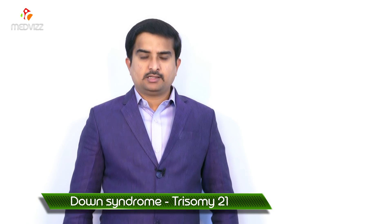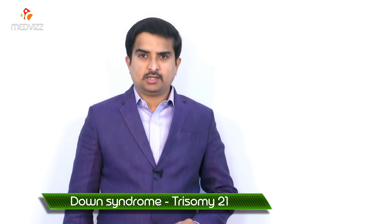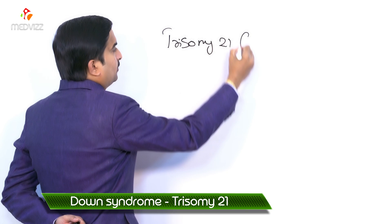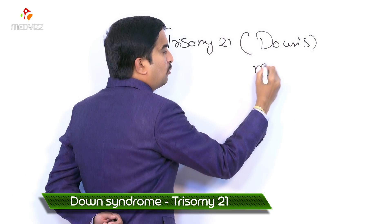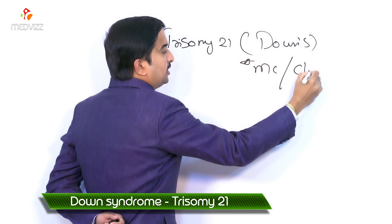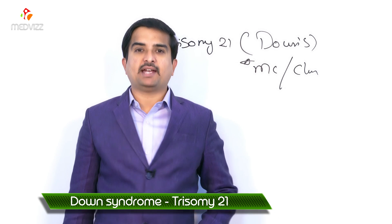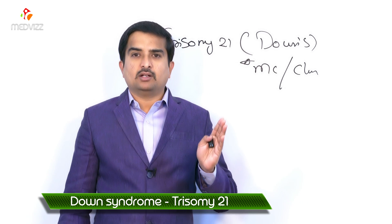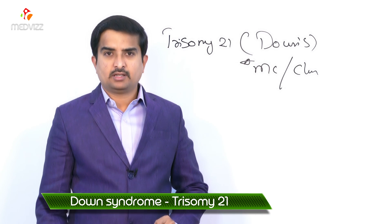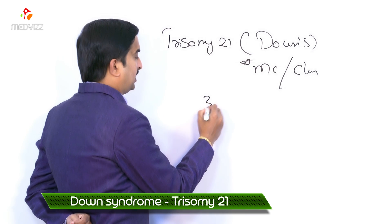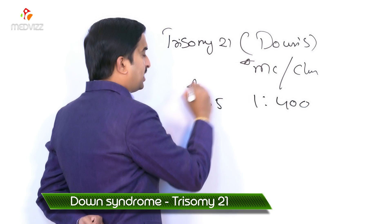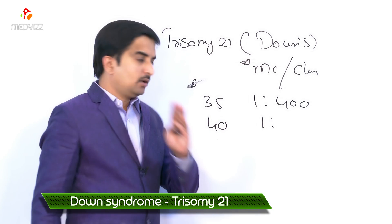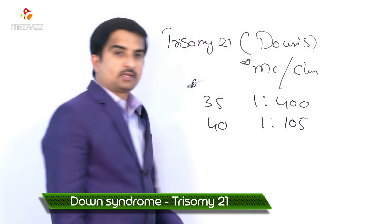Trisomy 21, also called Down syndrome, is the most common chromosomal disease. The incidence increases with maternal age. If the mother is younger than 30, it is seen in less than 1 out of 1,000 births. If the mother is 35, the ratio is 1 in 400, and if the mother is 40, it is approximately 1 in 105.